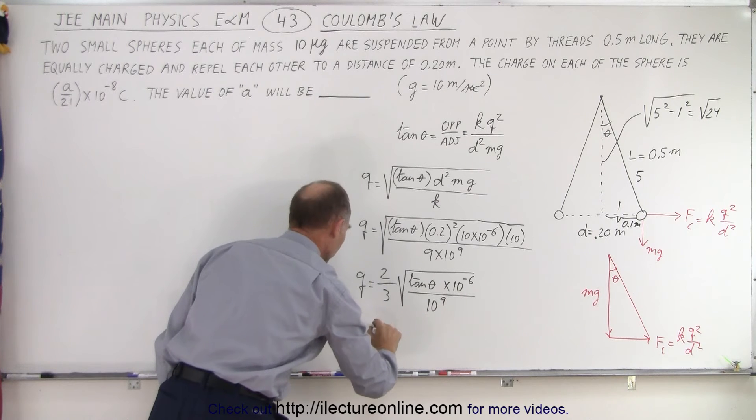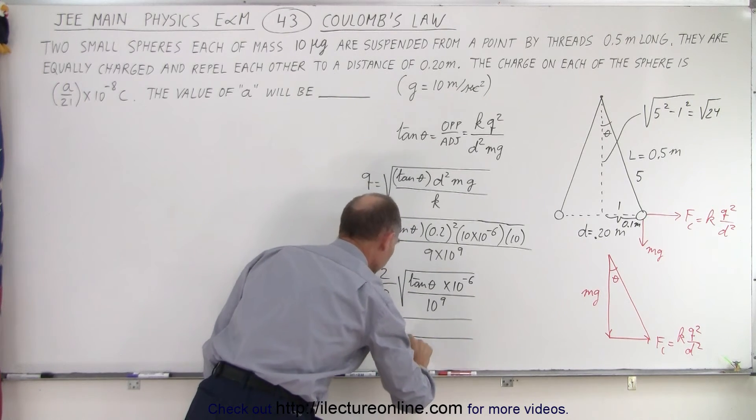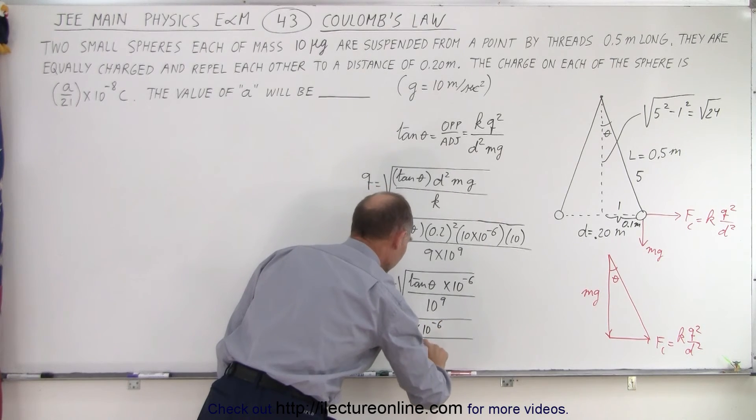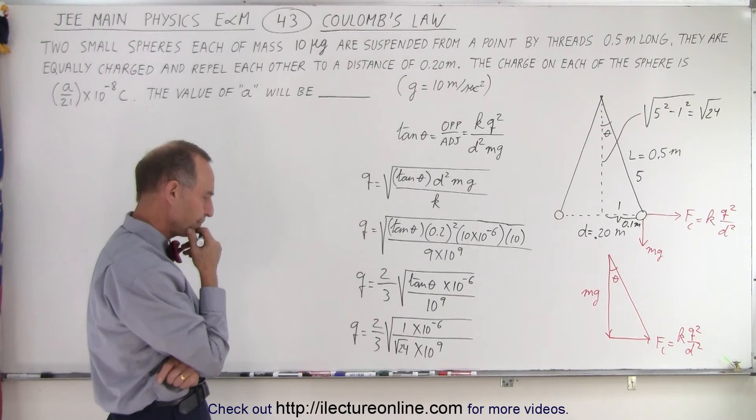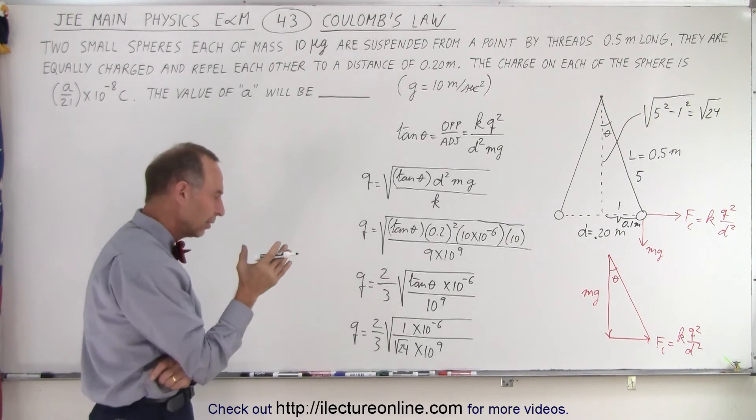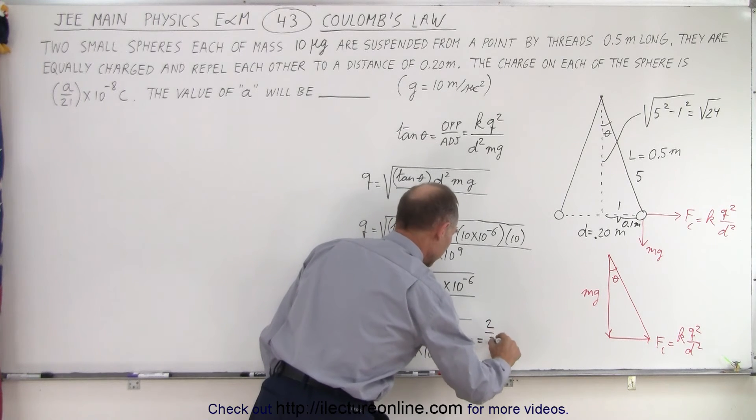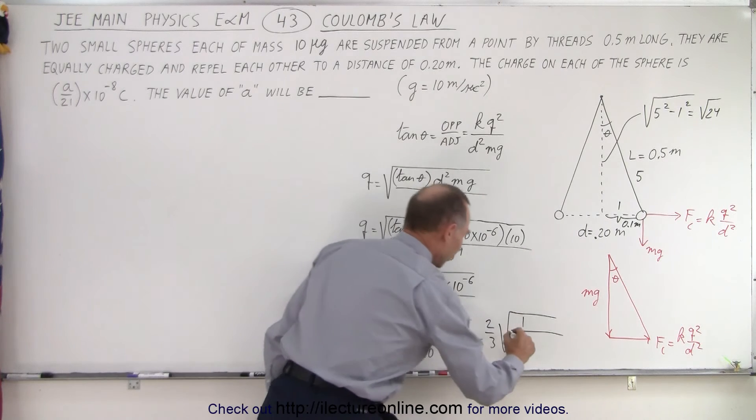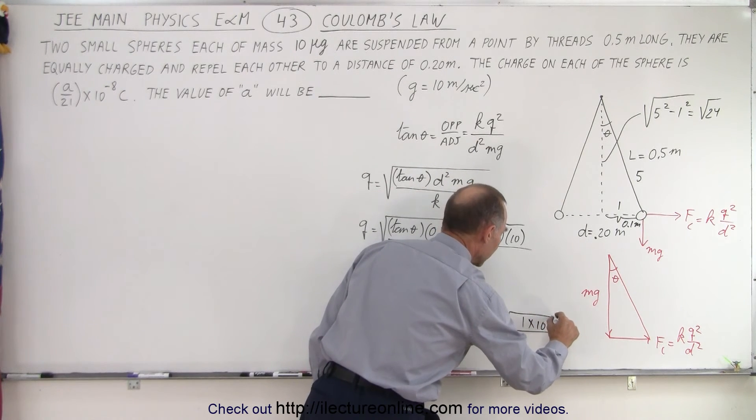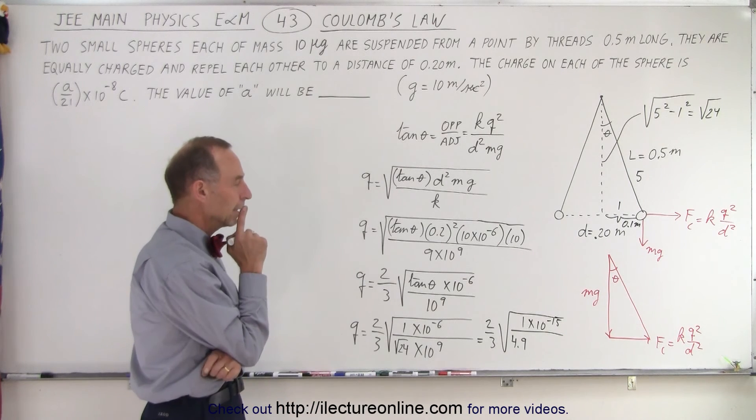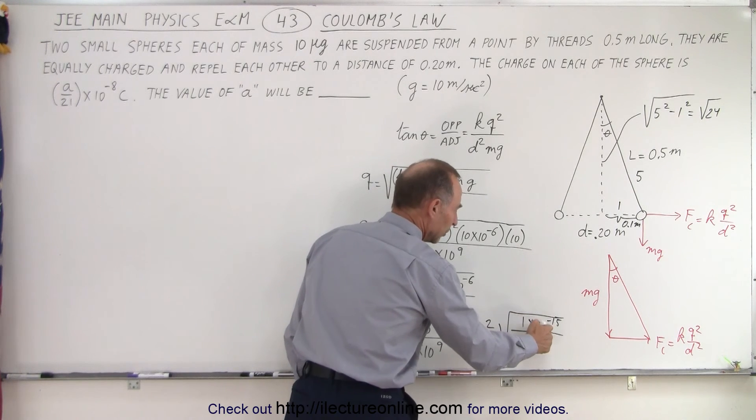So the tangent of theta is the opposite side over the adjacent side, which is 1 over the square root of 24. So this can be written as Q is equal to 2 over 3 times the square root of 1 over the square root of 24 times 10 to the minus 6 divided by 10 to the ninth. How do we deal with 1 over the square root of 24? Well, I know that the square root of 25 is 5. The square root of 24 must be about 4.9. If I now multiply this by 10, then I need to multiply the numerator by 10.